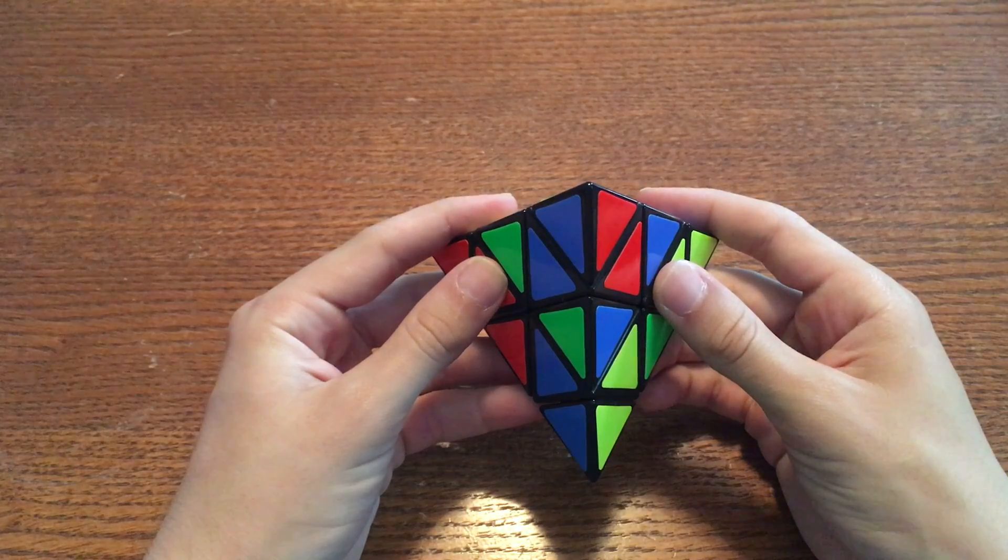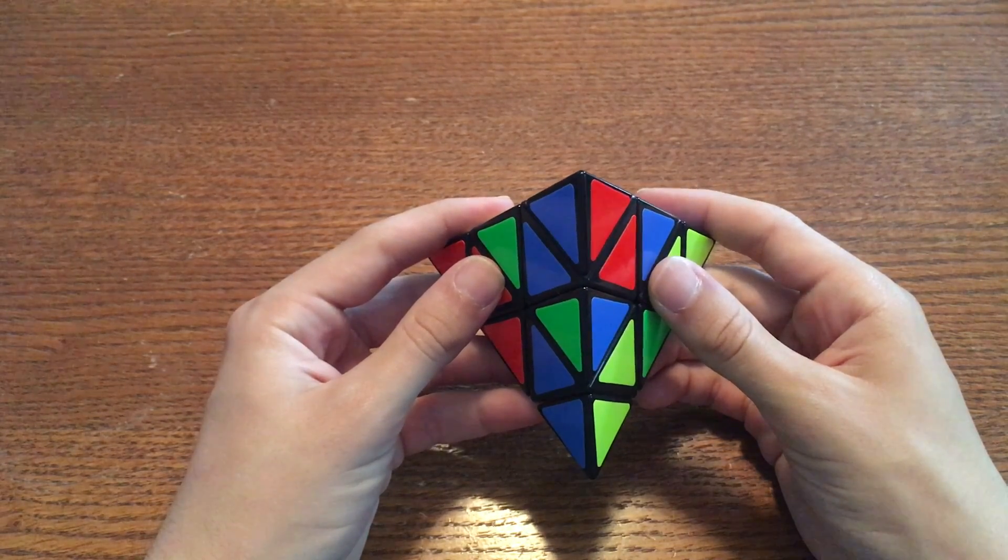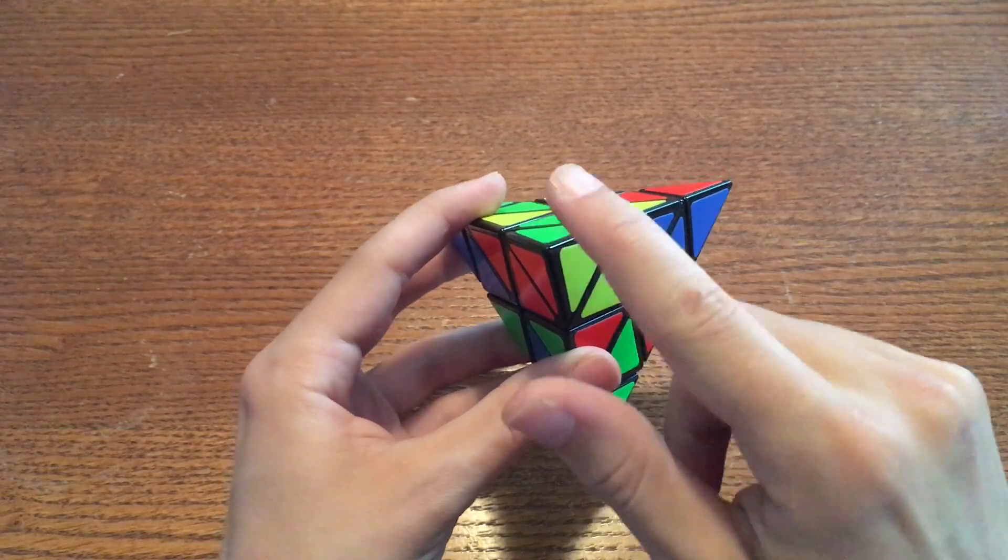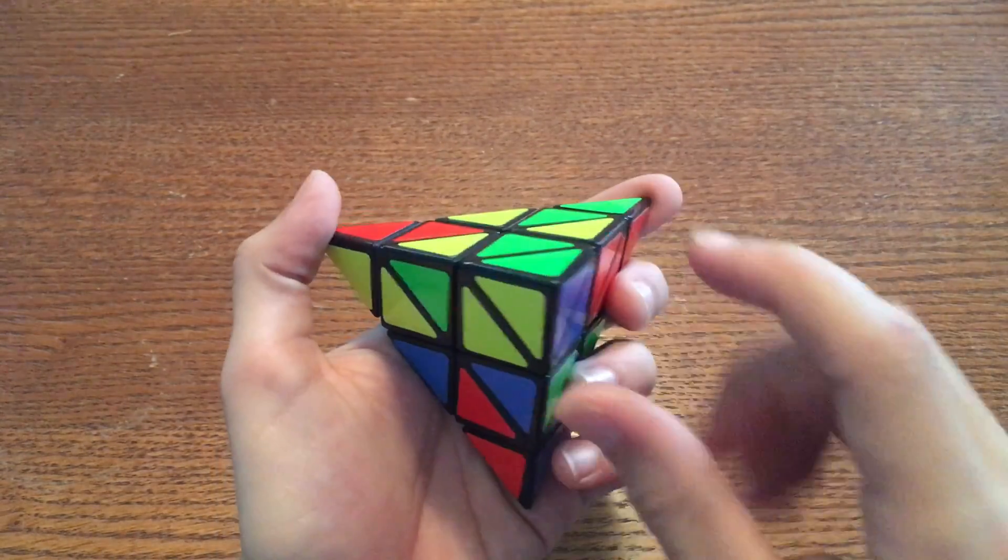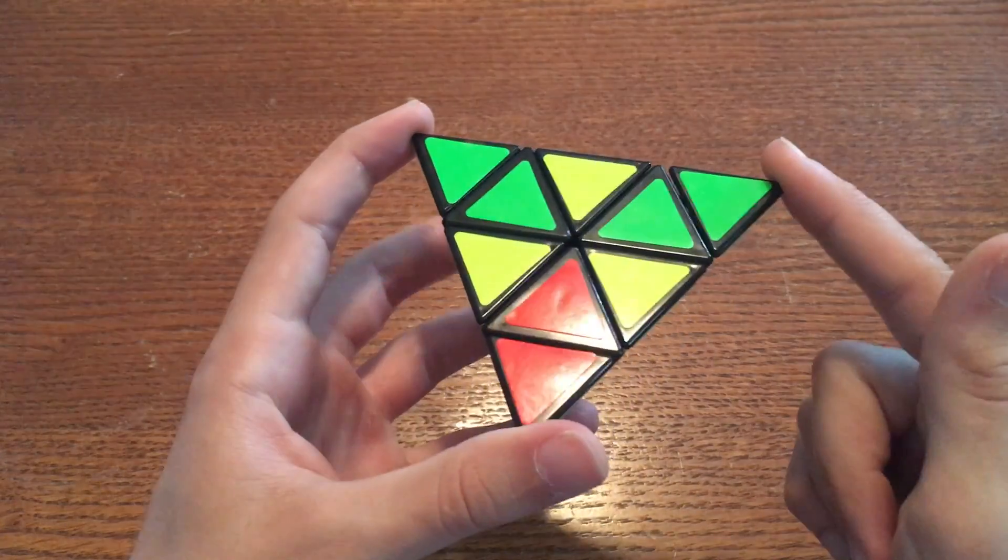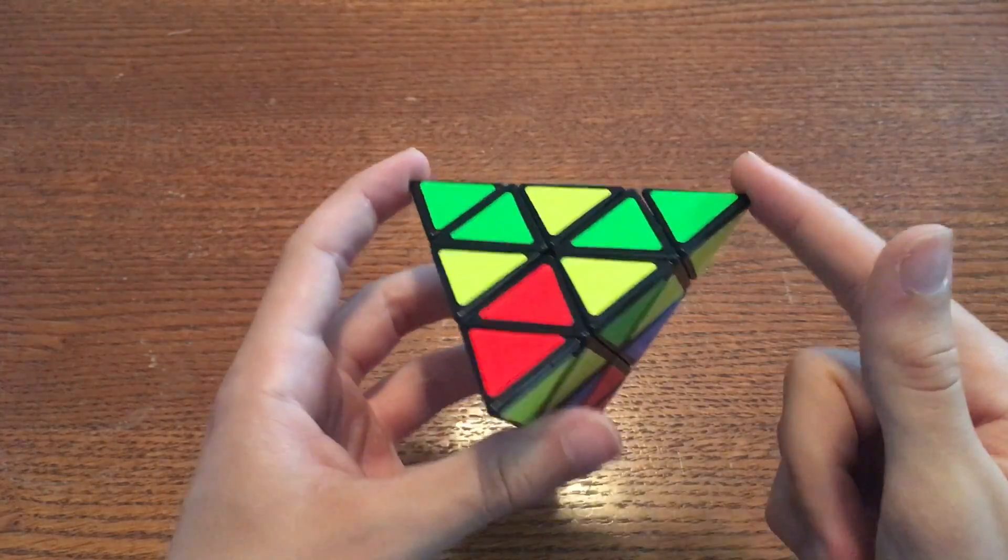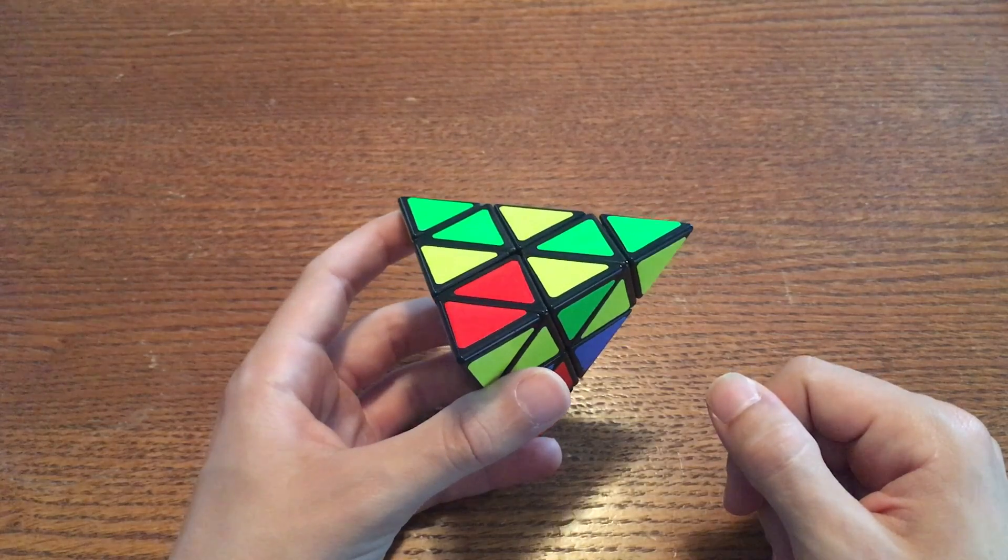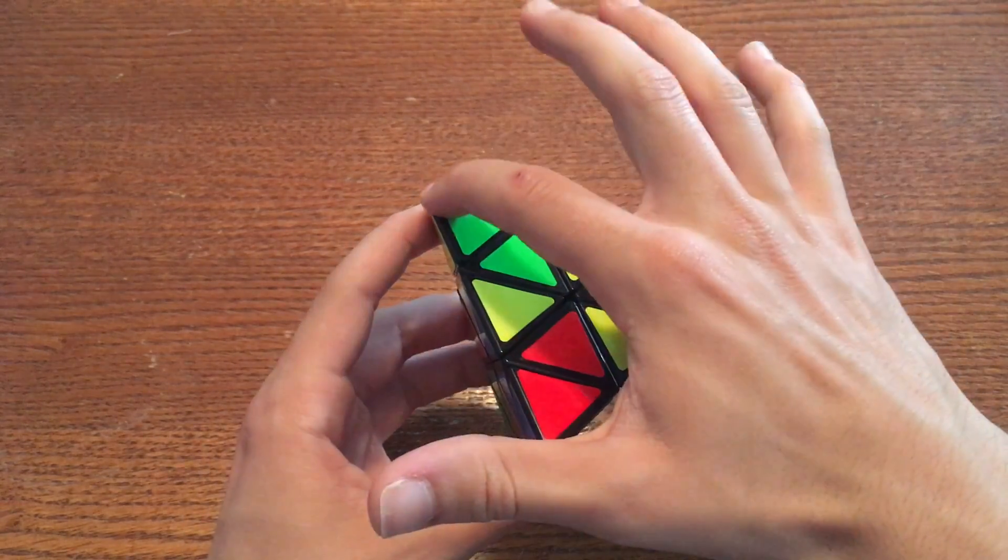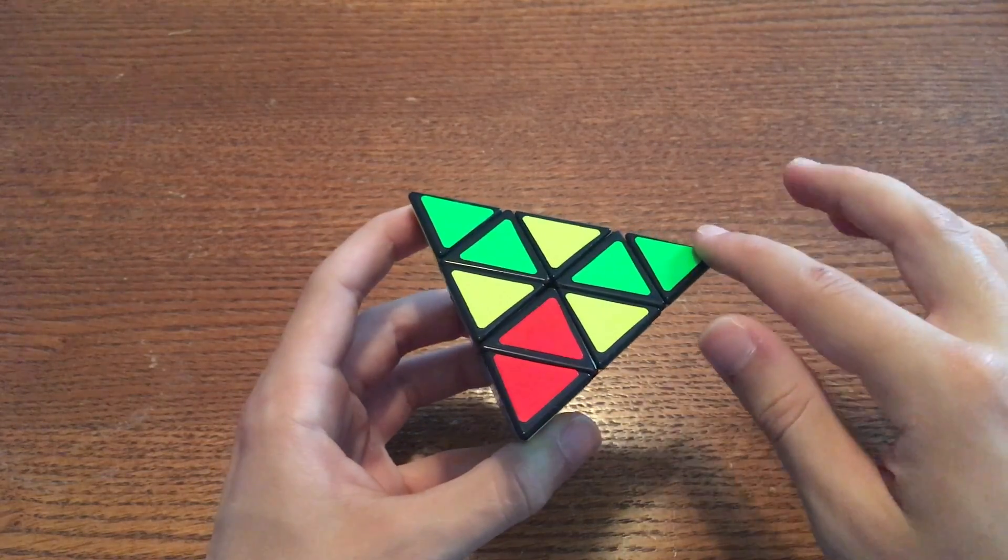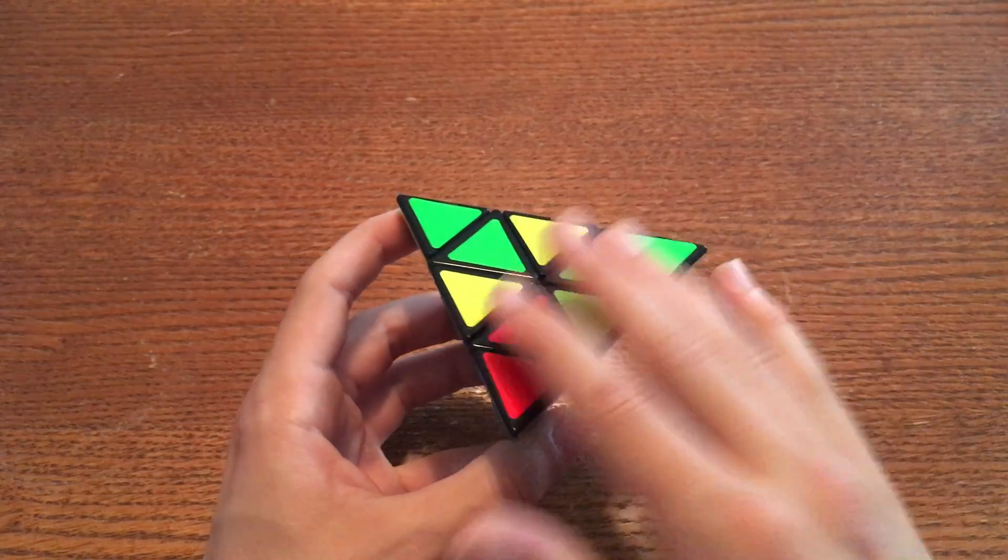Now find the three corners that have yellow on them. This one has yellow, this one has yellow, and this one has yellow. Three corners make a triangle so you need to find that triangle. So if the three corners with yellow are here, here, and here that means the triangle is this whole face.